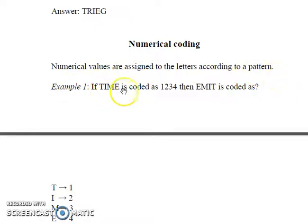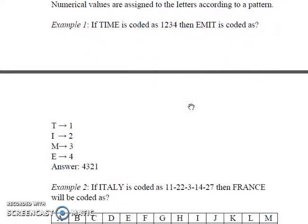Suppose TIME is coded as 1, 2, 3, 4. Then what will be the code for the word EMIT? As we can see that T is coded as 1, I as 2, M as 3, and E as 4. So the word EMIT will be encoded accordingly, giving us this answer: 4, 3, 2, 1.